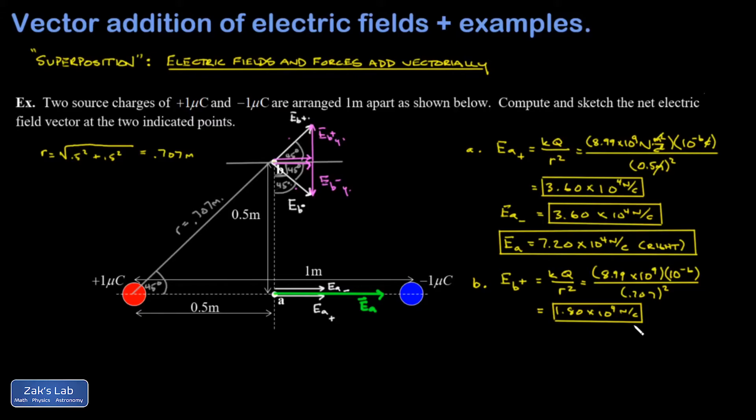I need the parallel component of that. So I'm going to need an E_B plus parallel, which is given by E_B plus times the cosine of theta. So 1.80 times 10 to the 4th cosine 45 degrees, which gives me 1.27 times 10 to the 4th newtons per coulomb.